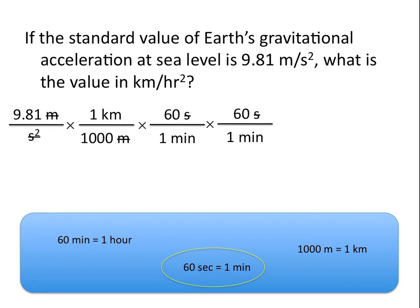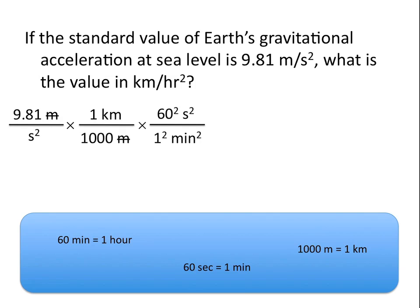The best way to solve these dimensional analysis problems is always to write out your conversion factor as many times as you need to, to cancel out all the units on the bottom. Because we had seconds squared — or seconds times seconds — on the bottom, we need two conversion factors with seconds on the top. But if you'd like, you can also just square the units on your conversion factor as well as squaring the number, and write your conversion factor like this: 60 squared seconds squared per 1 squared minute squared.